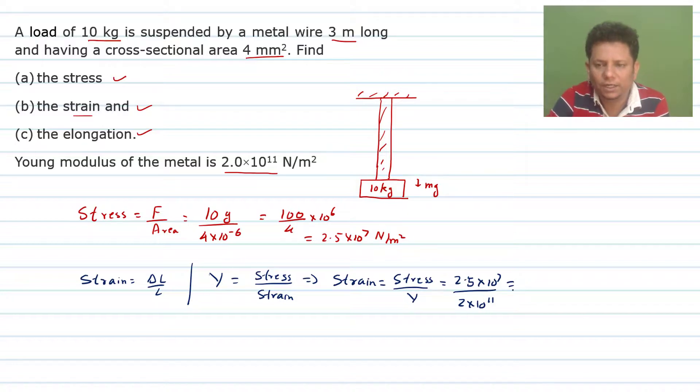So this is 2.5 divided by 2 times 10⁷ divided by 10¹¹, which is 1.25 × 10⁻⁴. Strain is unitless.